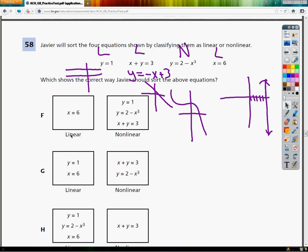F says the only linear term is x is equal to 6, that's not true. G says that x equals 6 and y is equal to 1 are linear, but then it has x plus y equals 3 being nonlinear. Well that's not true, it's a straight line, you can graph it yourself.